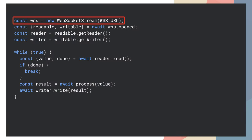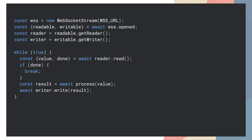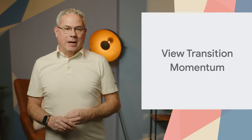Start by constructing a new WebSocket stream and passing it the URL of the WebSocket server. Next, wait for the connection to be opened, which returns a readable stream and a writable stream. By calling readableStream.getReader, you get a ReadableStreamDefaultReader from which you can read the data. To write data, call writableStream.getWriter, which gives you a WritableStreamDefaultWriter so that you can write data to that.